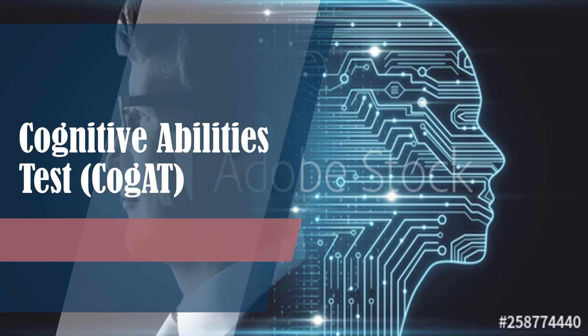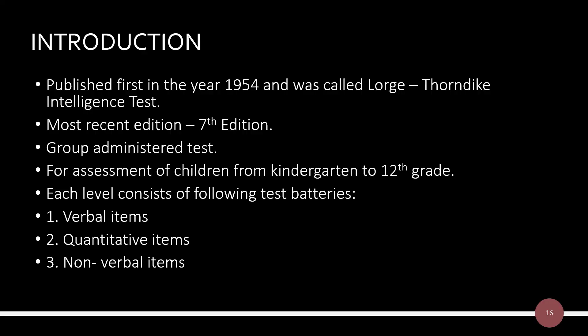Now let's move on to the Cognitive Abilities Test, which is a type of group intelligence test. It was first published in 1954 and was originally called the Lorge-Thorndike Intelligence Test, named after its developers Robert L. Thorndike and Irving Lorge. The 7th edition is the most recent edition. This test is administered to a group of individuals and is used for the assessment of children by grade. Each level consists of three test batteries: verbal items, quantitative items, and non-verbal items. This test is administered online.